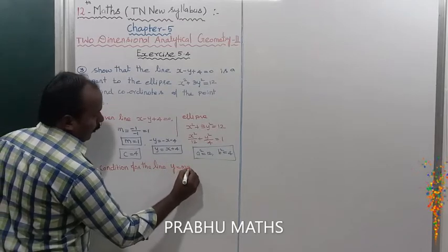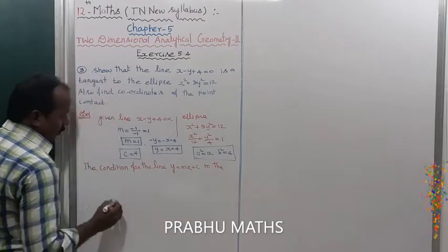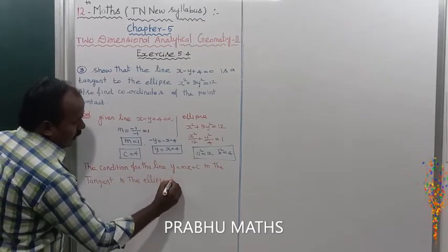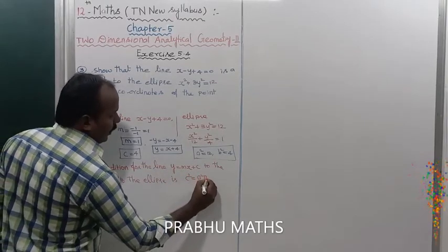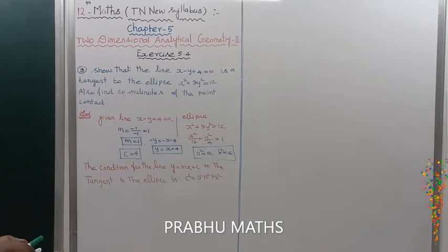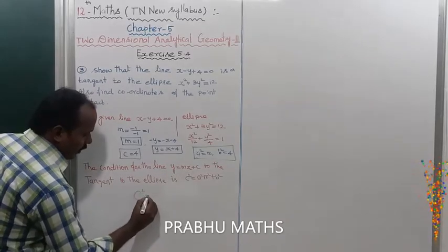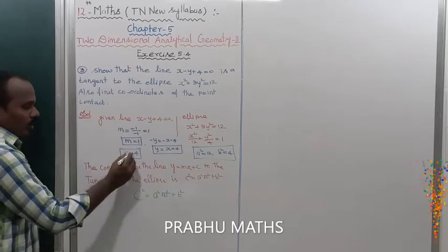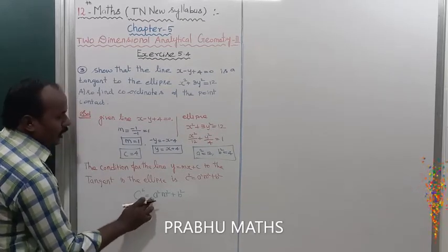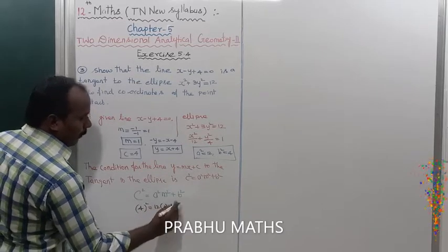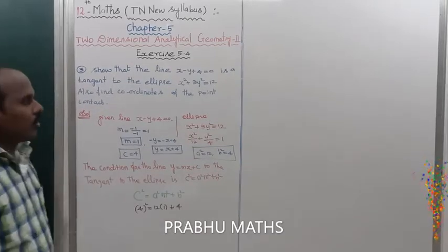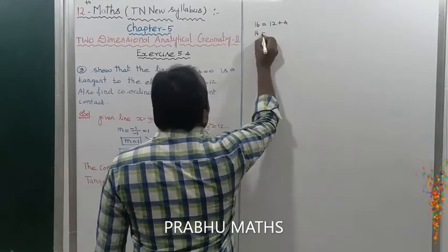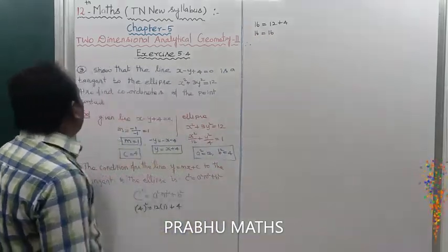The condition for y equal to mx plus c to be a tangent to the ellipse is c square equal to a square m square plus b square. Substituting: 4 squared equals 12 into 1 plus 4. So 16 equals 12 plus 4, which gives 16 equals 16. Therefore the condition is satisfied — the line touches the ellipse at one point.